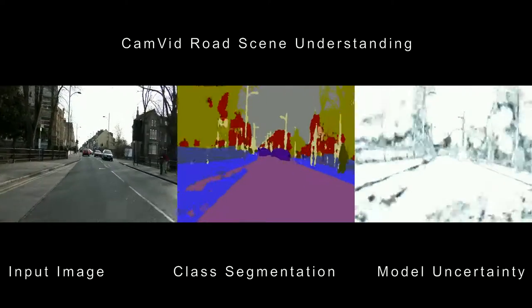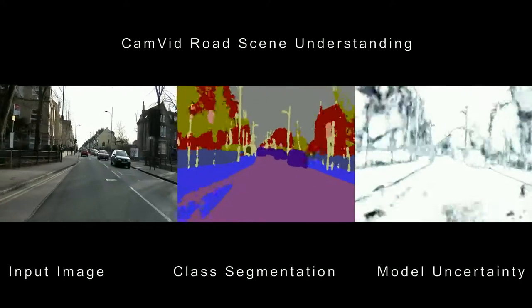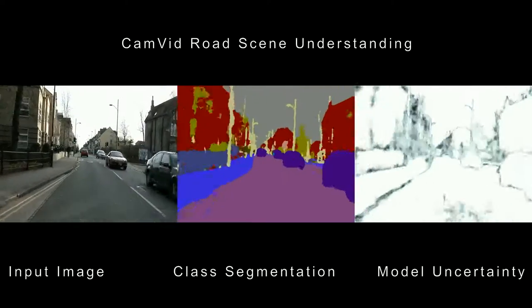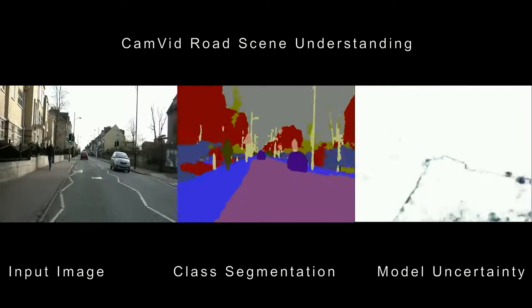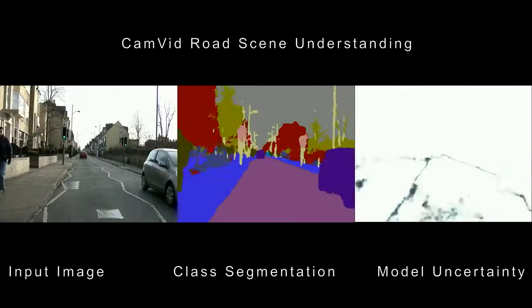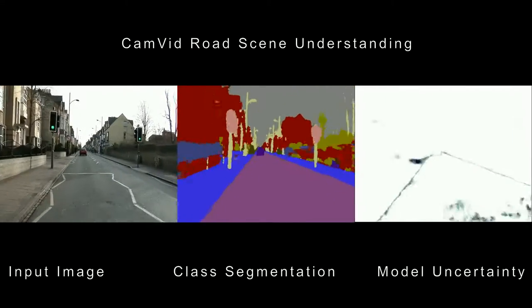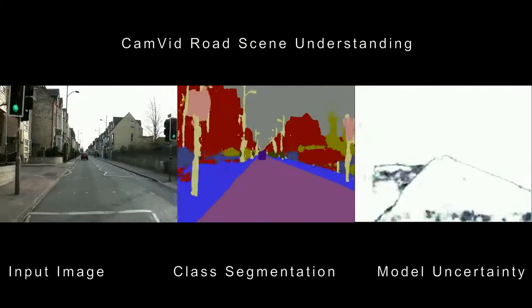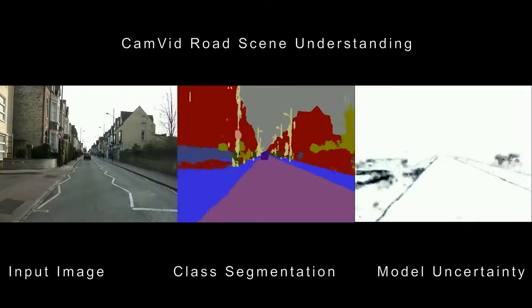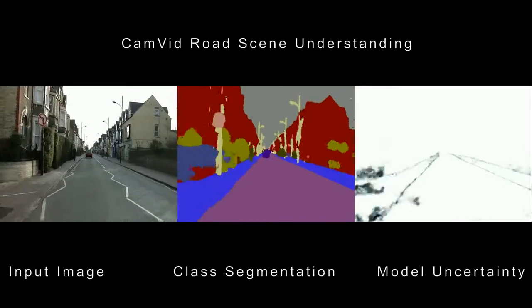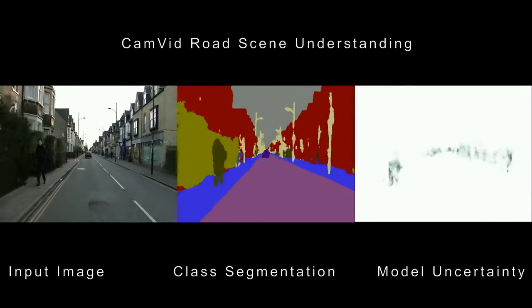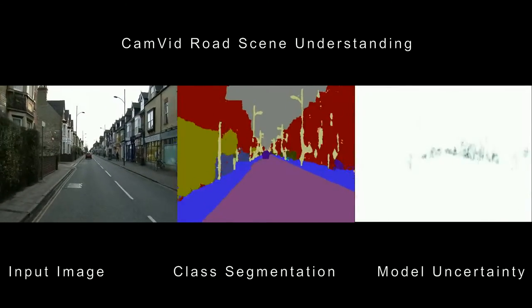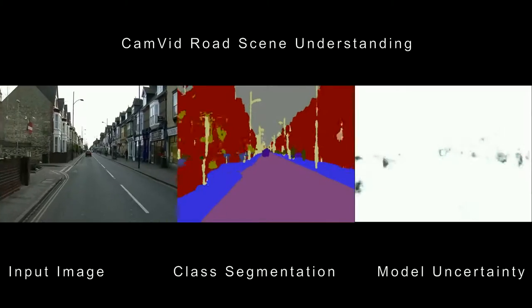We can also view the uncertainty for individual classes. This is the model uncertainty for road, sidewalk, pedestrian, and the car class.